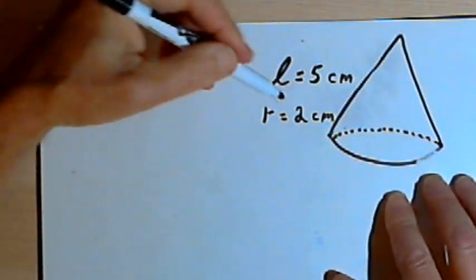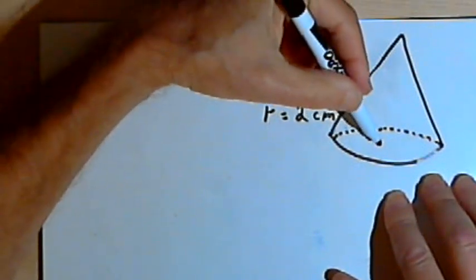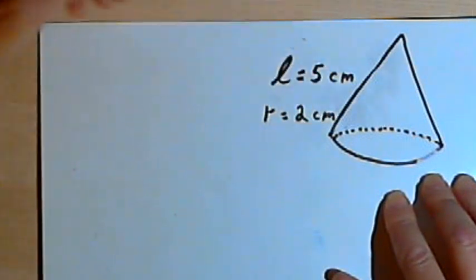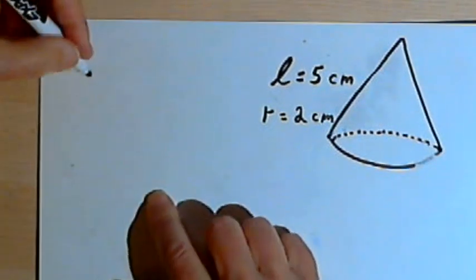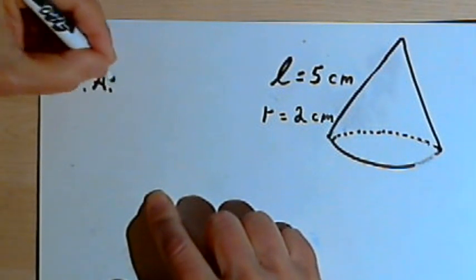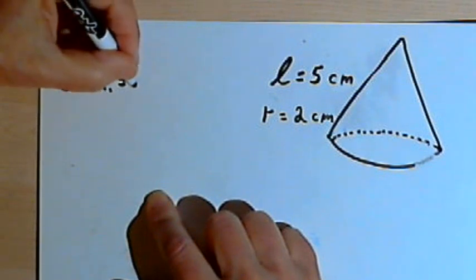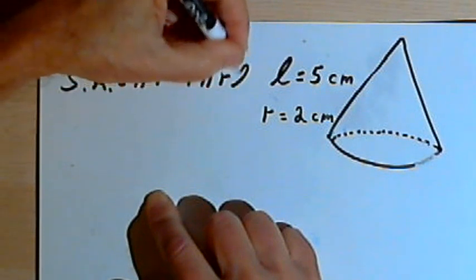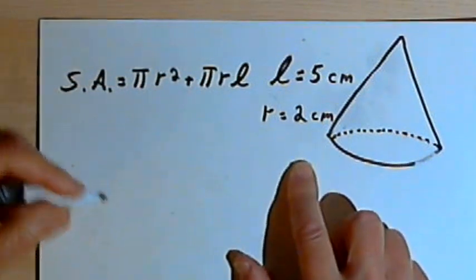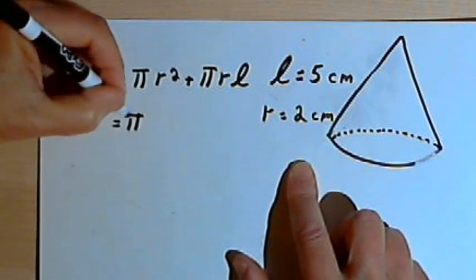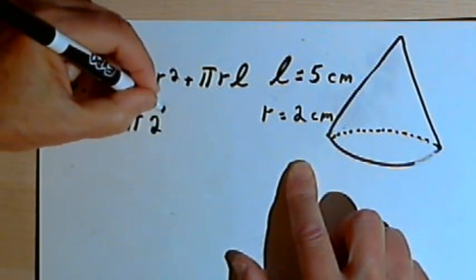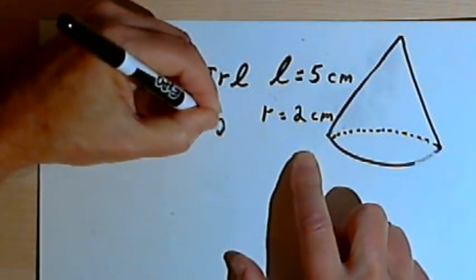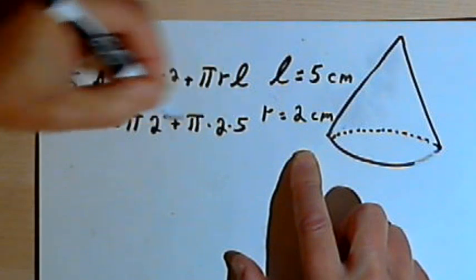In this first problem, I'm given the radius of the base, that's 2 centimeters, and L, which is the slant height, that's going to be 5 centimeters. So we'll write down that formula again. Surface area equals pi r squared plus pi r L. I'll just plug the numbers in. So we'll have pi times 2 squared plus pi times r, which is 2, times L, which is 5.